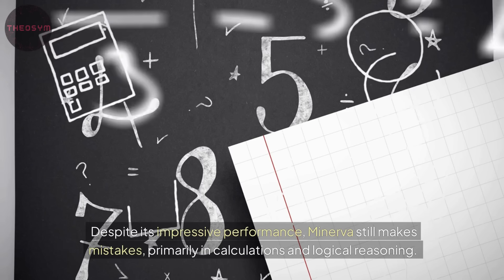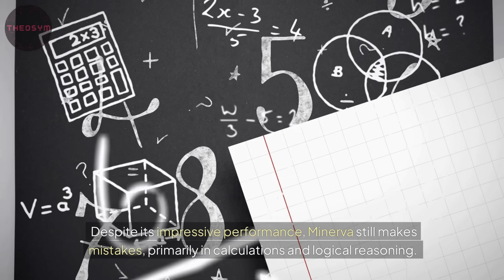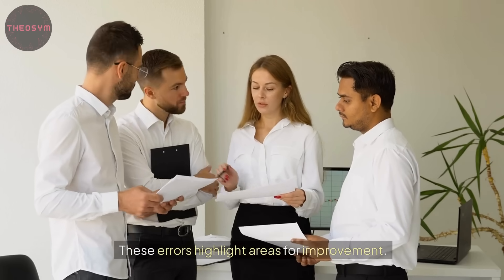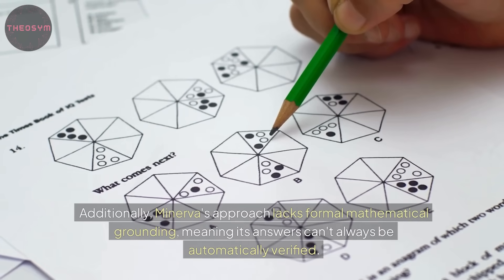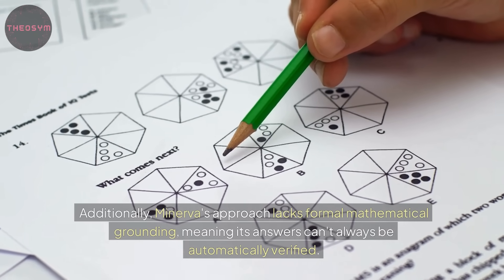Despite its impressive performance, Minerva still makes mistakes, primarily in calculations and logical reasoning. These errors highlight areas for improvement. Additionally, Minerva's approach lacks formal mathematical grounding, meaning its answers can't always be automatically verified.